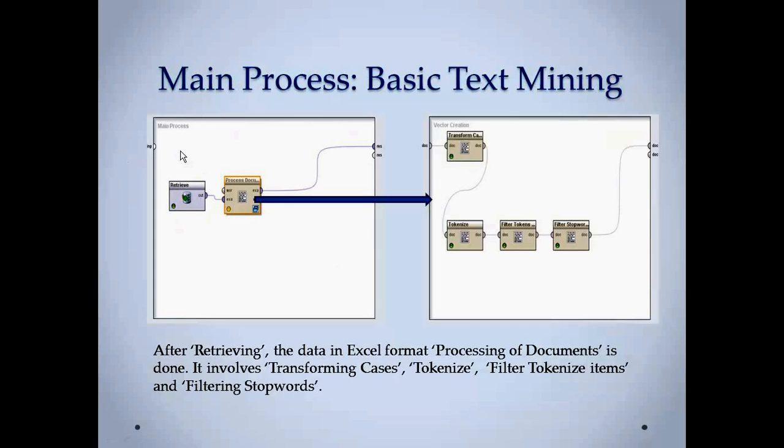Now the main process of basic text mining goes in the function here of the main process and in the vector creation that is inside process documents. First we have to retrieve the data from the Excel worksheet, giving that to the process documents to data. Inside it, you can see we have done operators like transform cases that lowers the cases of every word for better filtering. Then tokenizing the data, like tokenizing dashes, semicolons, and then filtering those tokens so that it can be removed from the data. Then filtering stop words. This operator basically stops special words like AND, IF that might not make much difference.